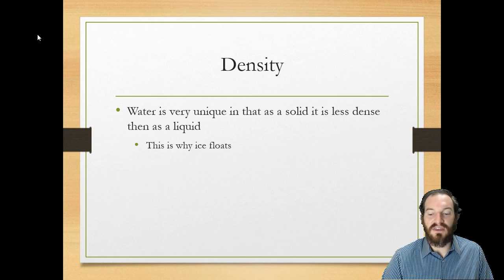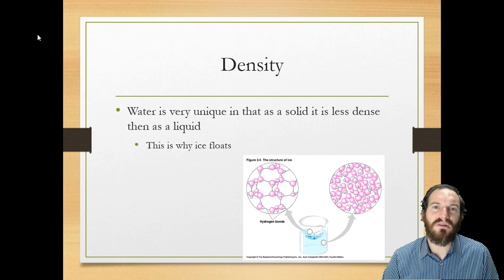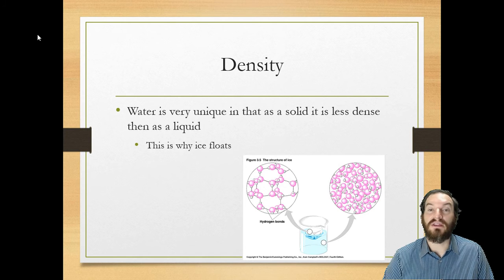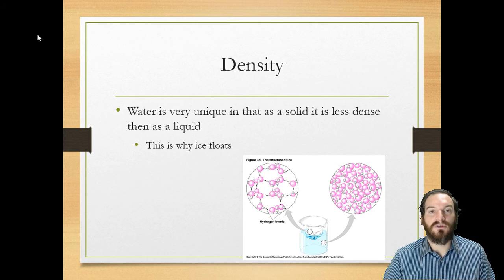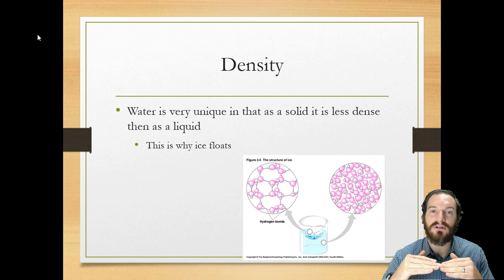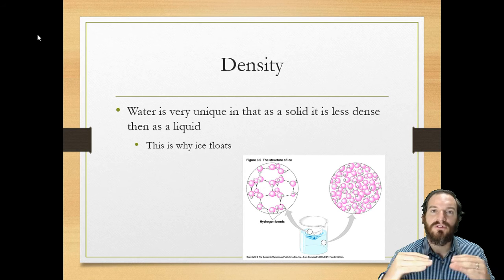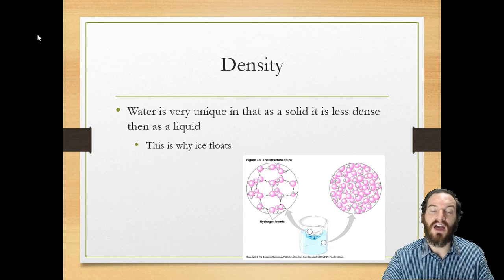And the last thing we want to talk about is the idea of density. Water is incredibly unique in that its solid is less dense than its liquid phase. Very few compounds on the planet are like this, but the solid is less dense. That's why ice will float. So when ice floats, especially in like winter environments, the ice forms to the top of the water on like a lake or something like that. It'll actually kind of, depending on how thick it gets, form kind of like a blanket and insulates the water underneath. So water will freeze from the top down.